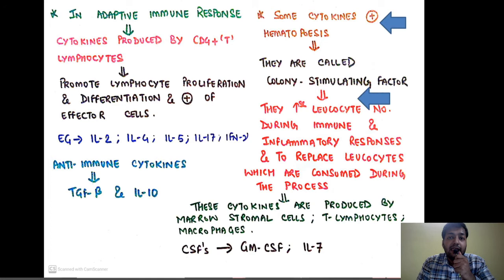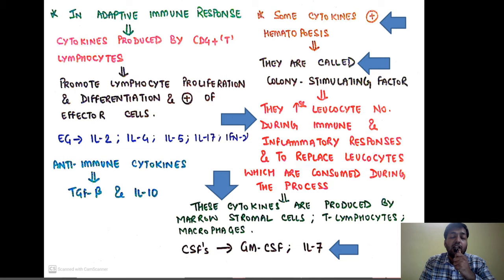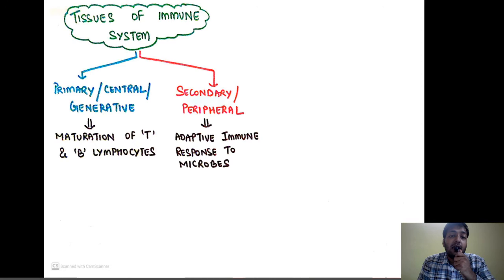Some cytokines stimulate hematopoiesis and are called colony stimulating factors or CSF. They increase leukocyte numbers during immune and inflammatory responses to replace leukocytes consumed or lost during the process. They are produced by marrow stromal cells, T lymphocytes, and macrophages. Examples are GM-CSF — granulocyte-monocyte colony stimulating factor — and interleukin-7.